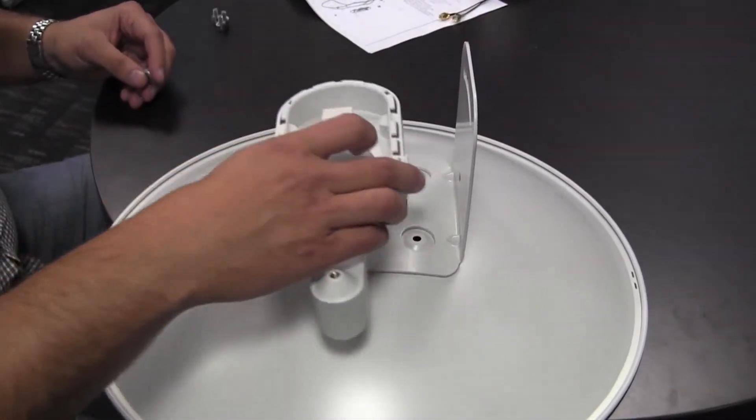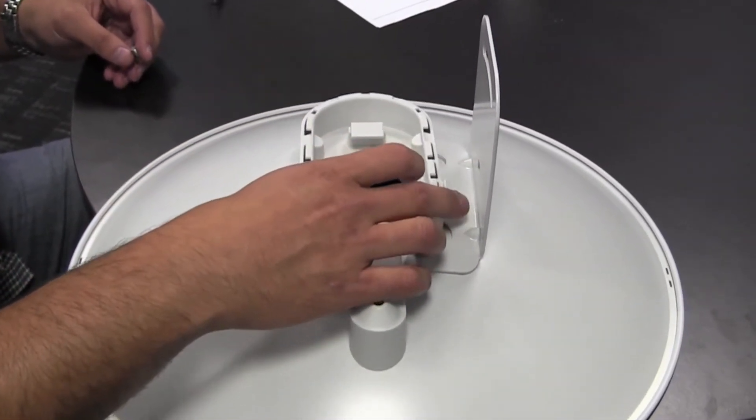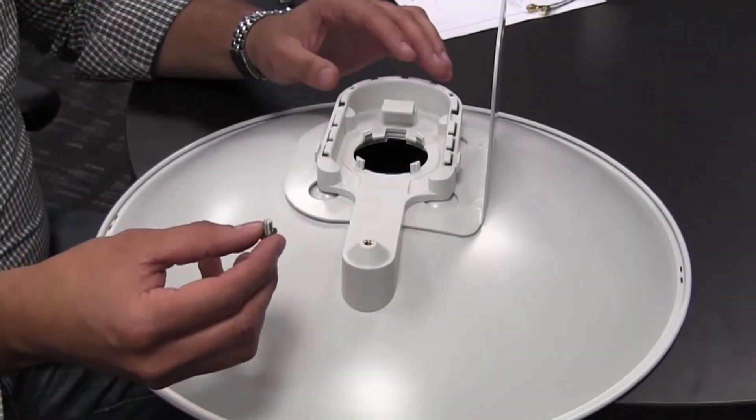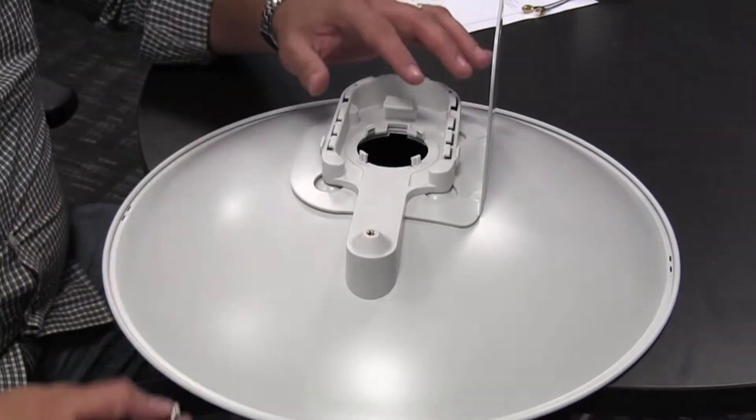Place the bottom housing onto the mounting bracket noting the notch there. Use the four screws provided to attach the bottom housing to the mounting bracket.